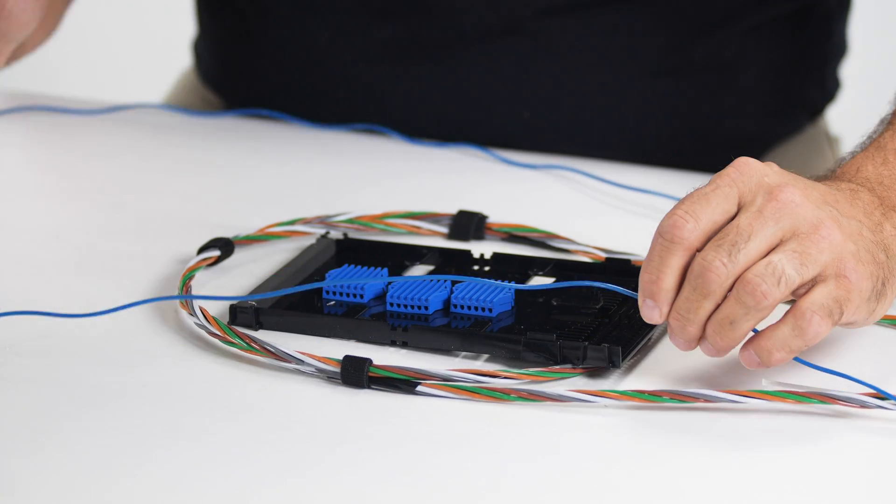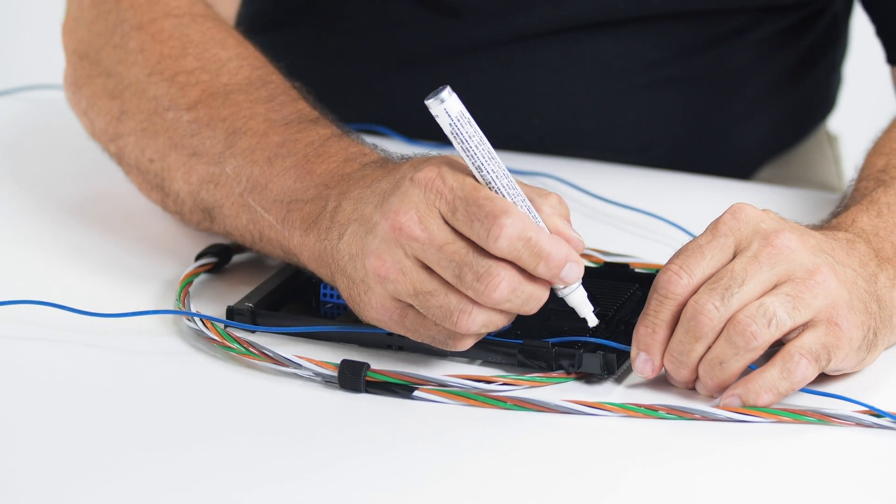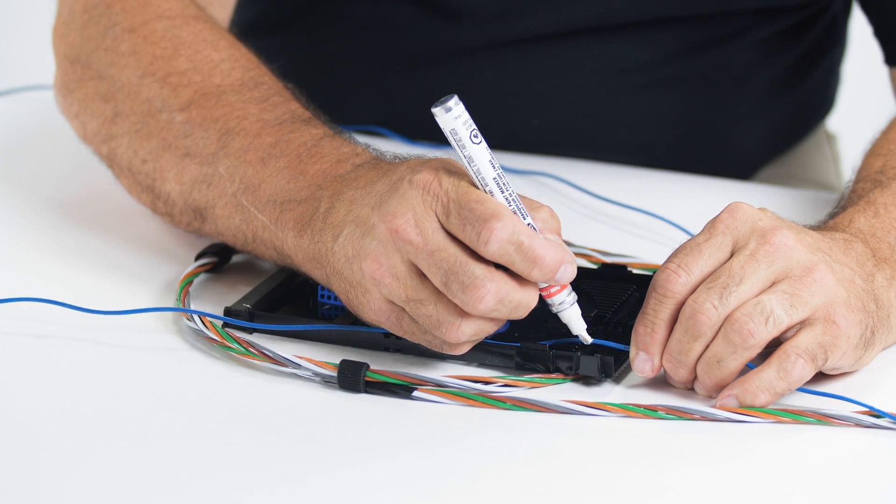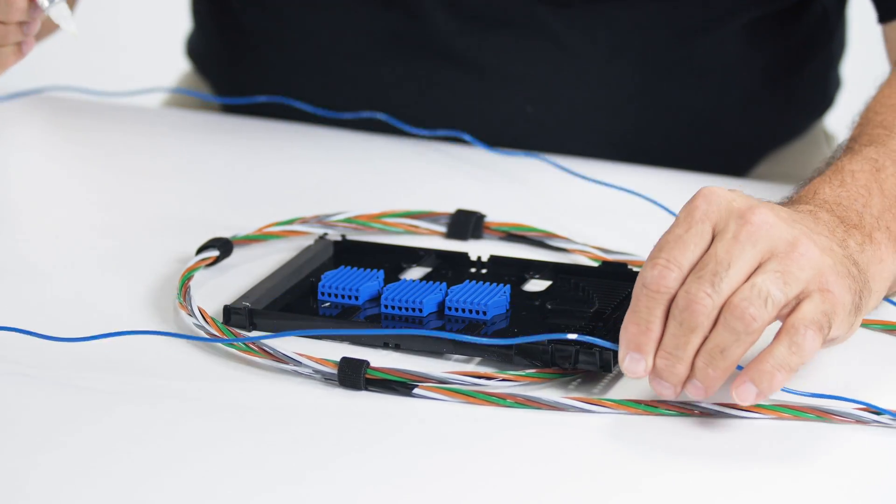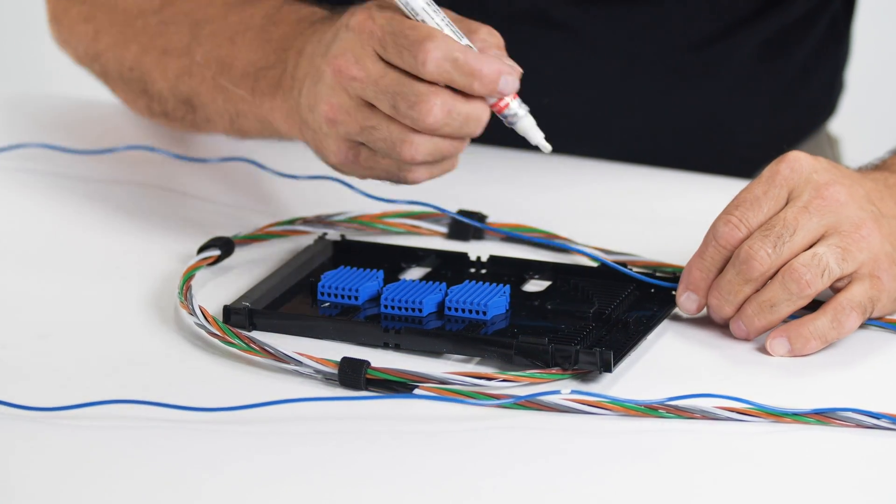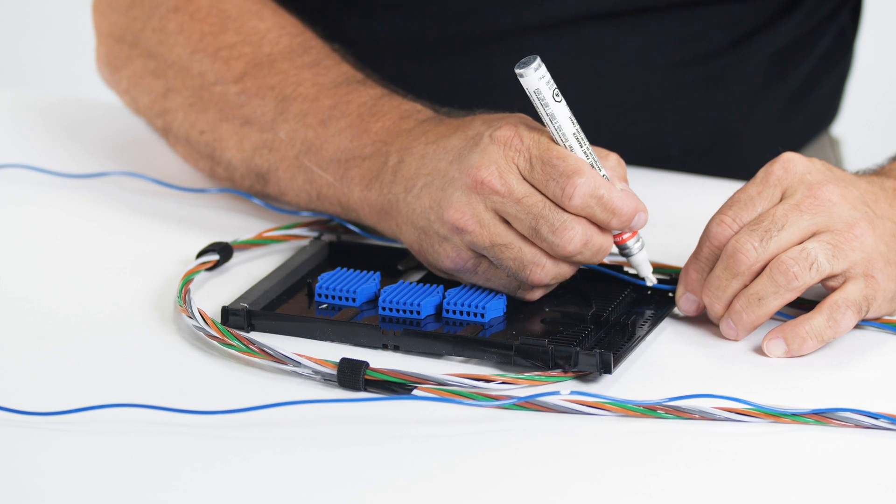Place a mark on each side of the buffer tube where the fibers will enter the splice tray. The length between the two marks will become the buffer tube access point.